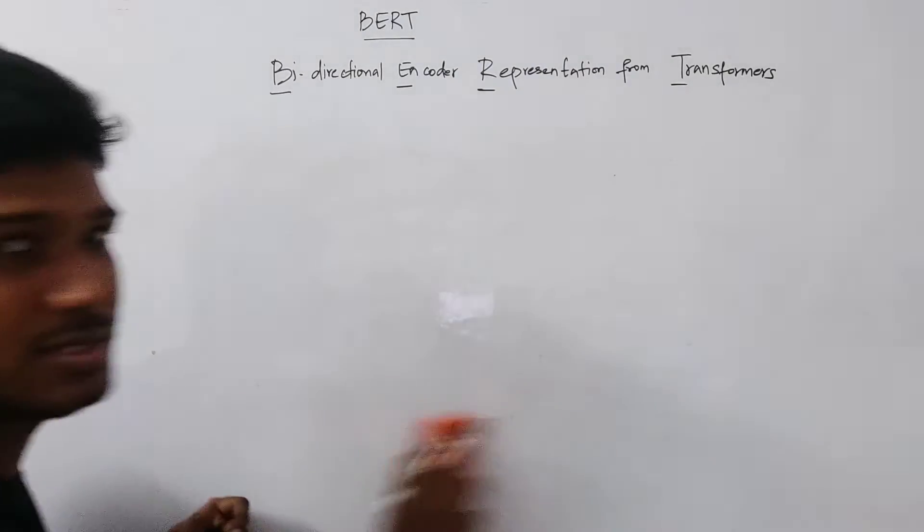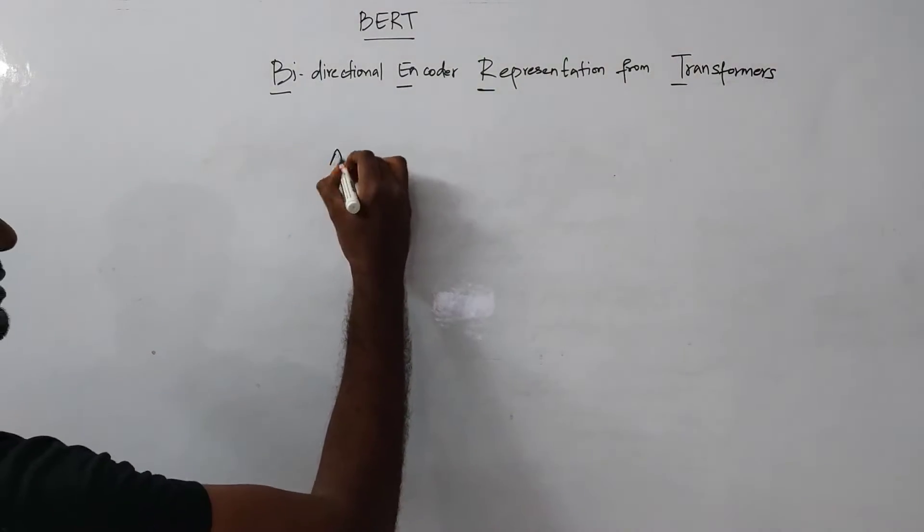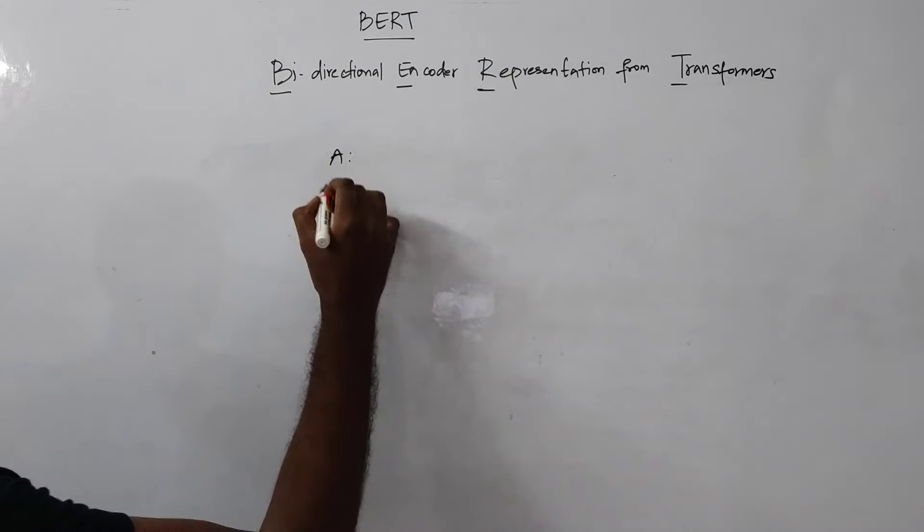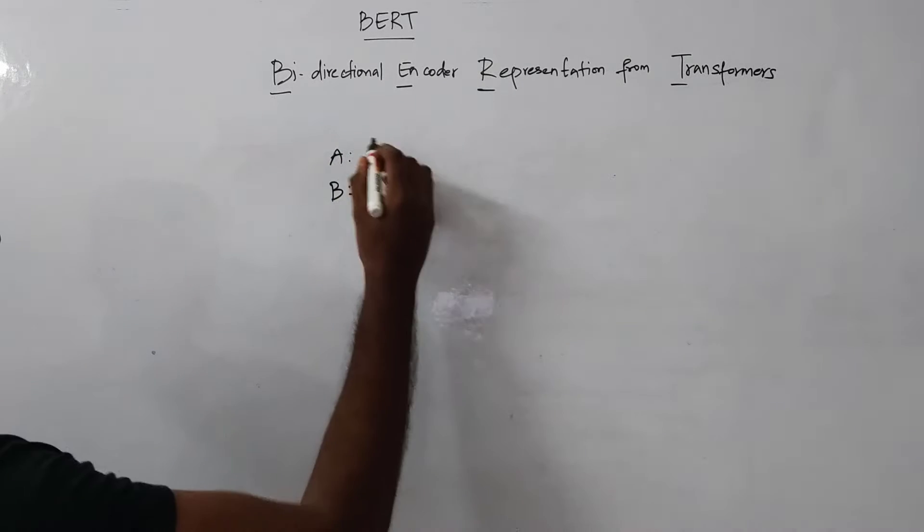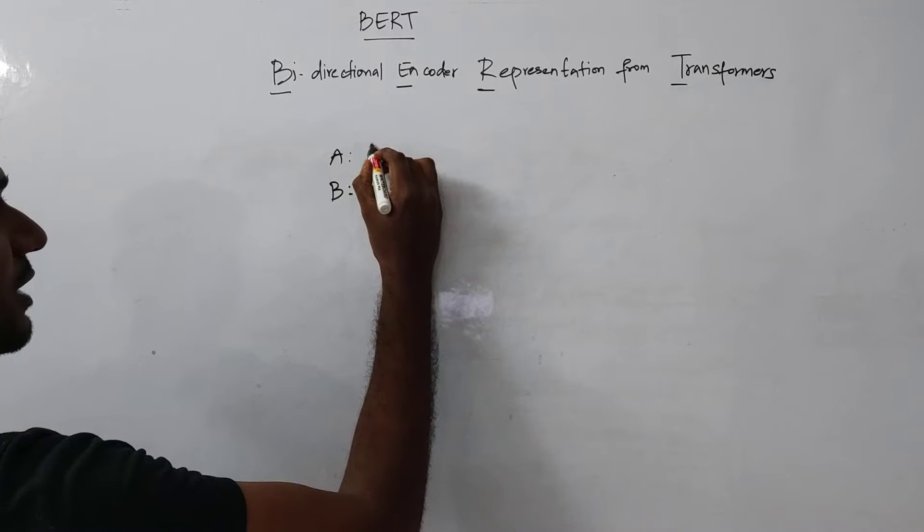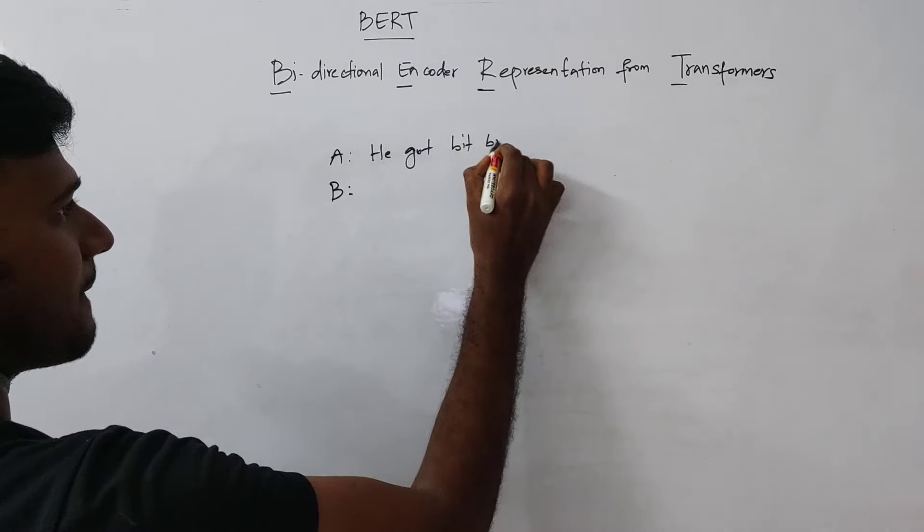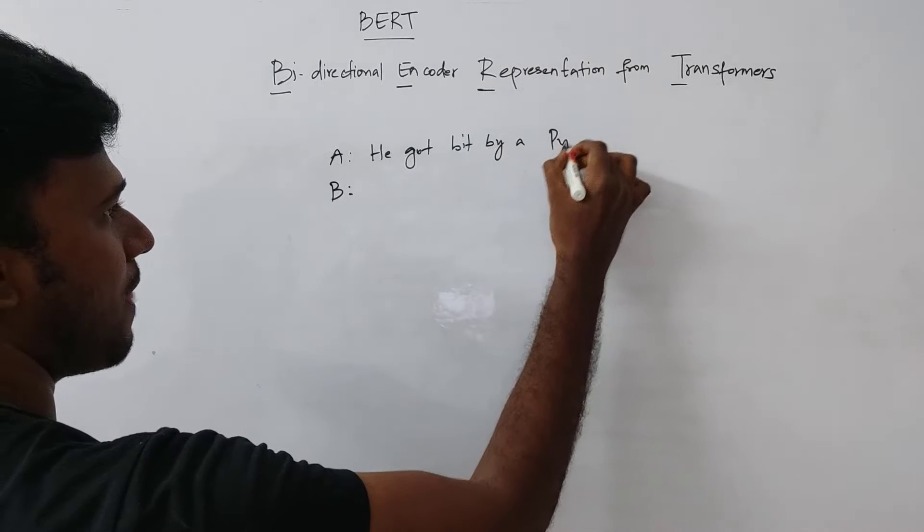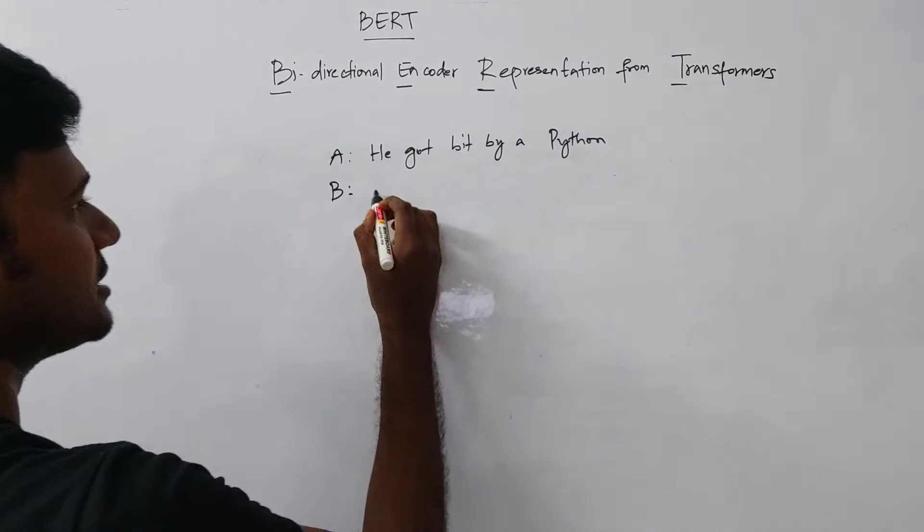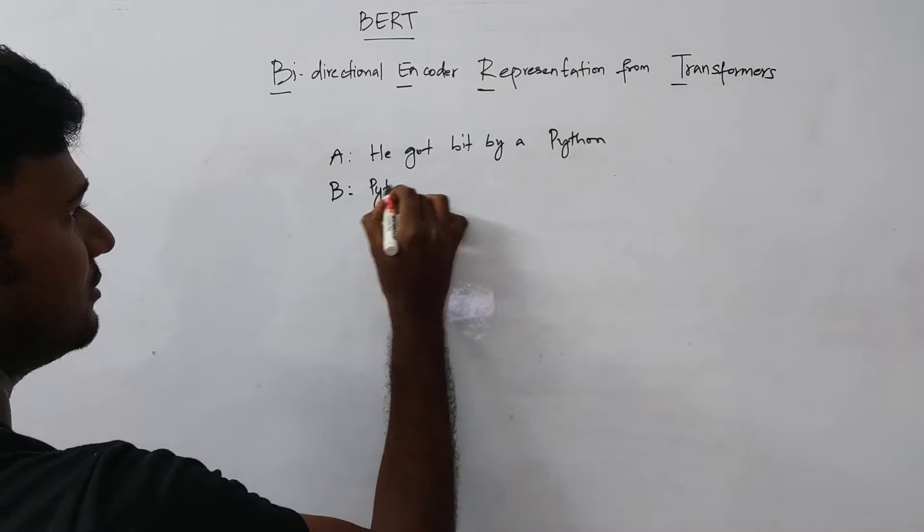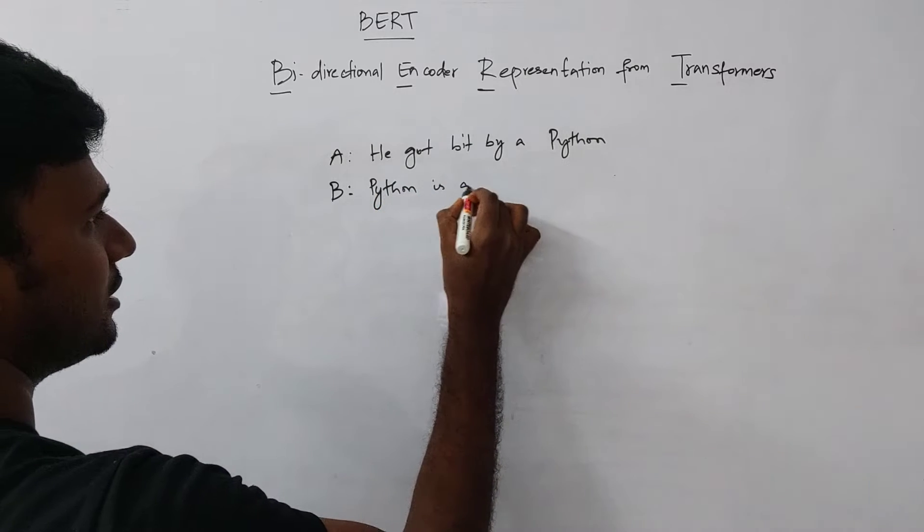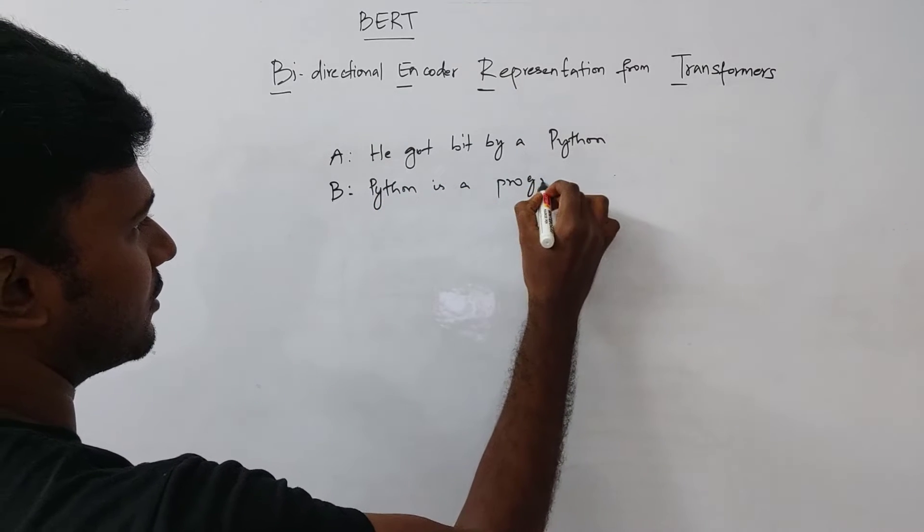So let us now take an example where I will take two sentences as example. Sentence A and then sentence B. So let us say sentence A, we have he got bit by a python. And in sentence B, we will have python is a programming language.